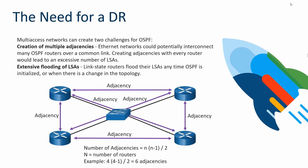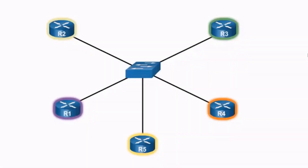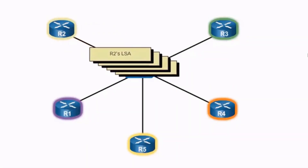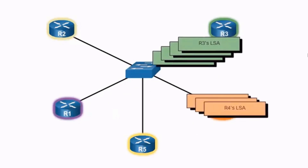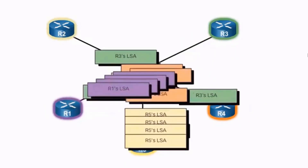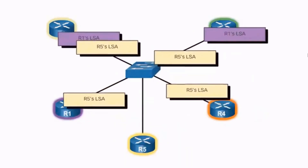Consider four routers interconnected by a switch. Every router forms an adjacency with every other router, meaning every router maintains a fully converged state with the other three. As topologies grow larger with more routers, this creates excessive link state advertisements between routers. Any network change causes extensive flooding — for example, when R2 has a change, it notifies all adjacent routers, and those routers notify all of their adjacencies in turn, resulting in excessive LSAs across the network.